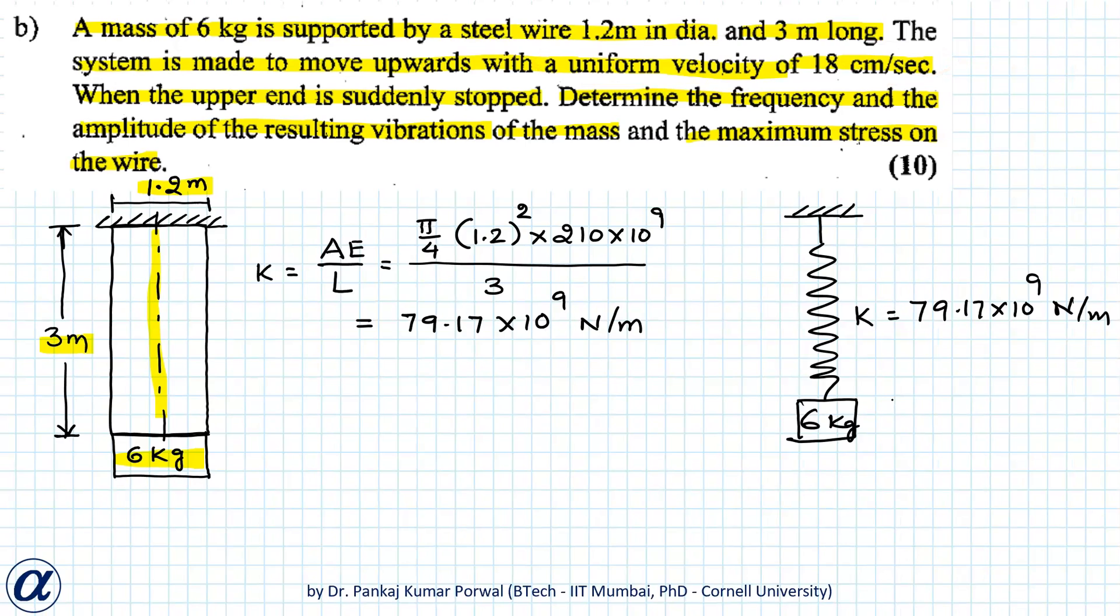So initial velocity of the block, let's call that x dot 0, is 18 centimeter per second and the initial displacement of the block will become zero. This undergoes simple harmonic motion in this configuration.